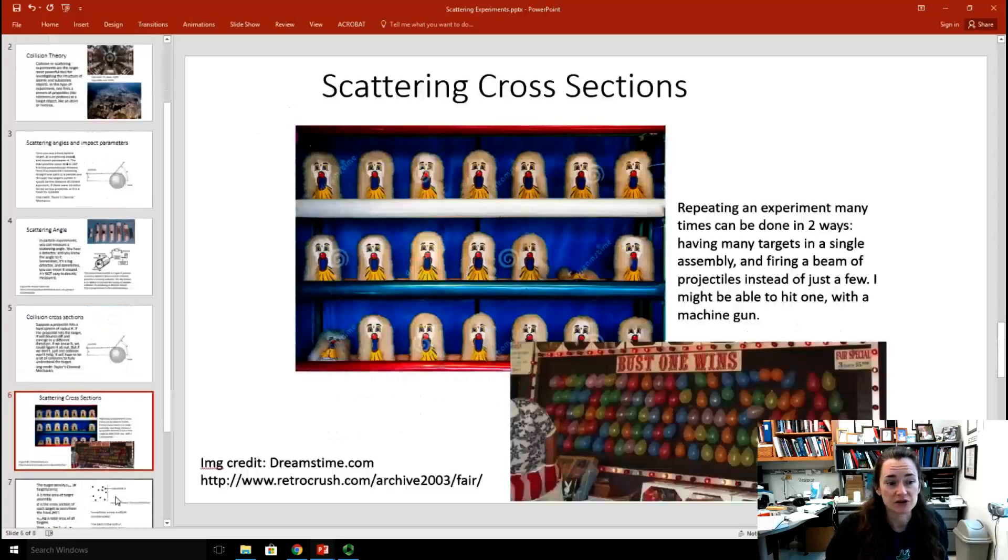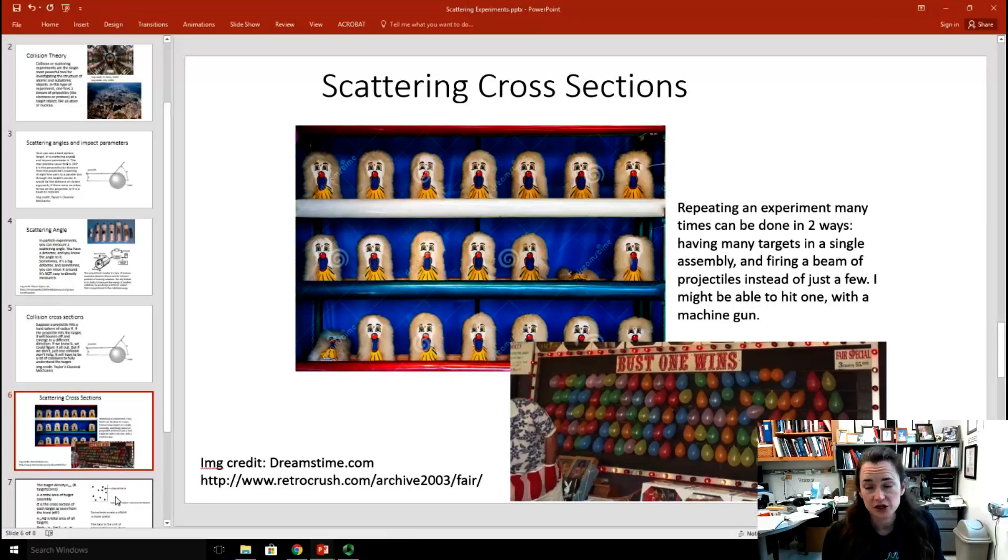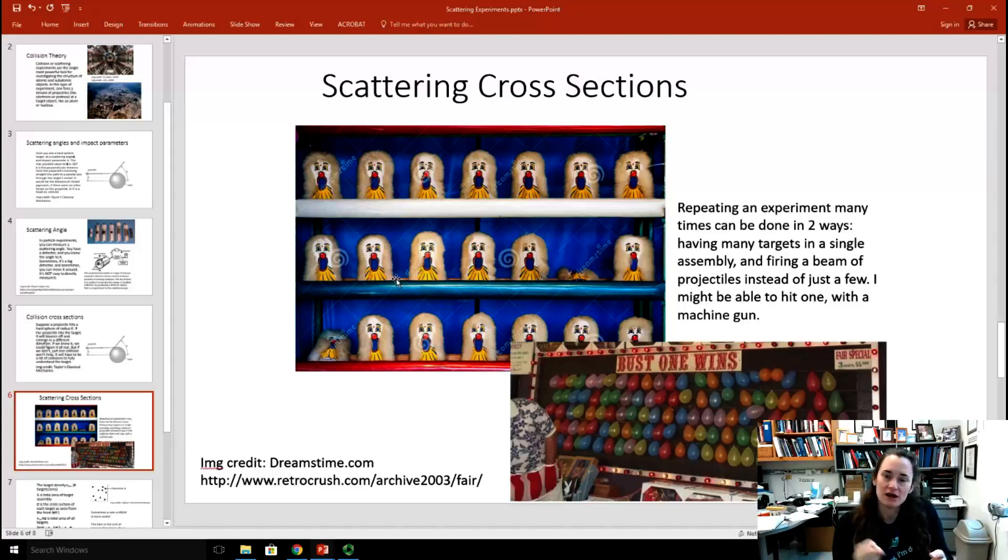In order to have a lot of collisions, you can do one of two things. You can have a lot of targets in a single assembly and fire a beam of a lot of projectiles instead of just a few projectiles. In our case, we're going to do both. We're going to have a lot of incoming projectiles and we're going to have a lot of targets. And that will give us information in a shorter period of time about what our targets look like. So that's kind of what's going on in these balloon games. Except maybe instead of throwing one ball at the time at those clowns that are mocking me, I have a machine gun and I just shoot at the clowns. Maybe then I could hit one.